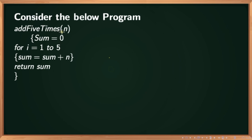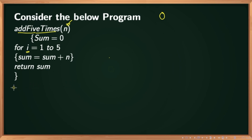We have a program here. Let us assume we want to represent the running time of this program in Big O notation. The program name is add5times and it takes an input parameter n. To find out the running time of a program, we assume the program is run on a theoretical machine called RAM or Random Access Machine, where each instruction takes 1 unit of time.